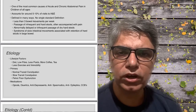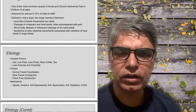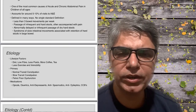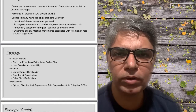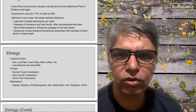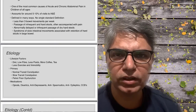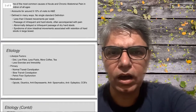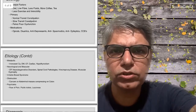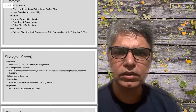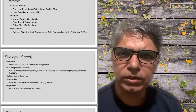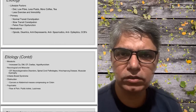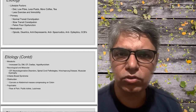Calcium channel blockers — though more common in adults — are notorious for causing constipation as a side effect, such as diltiazem and amlodipine. Metabolic reasons include hypercalcemia, which can be caused by hyperparathyroidism or sarcoidosis, and diabetes mellitus, which through its autonomic dysfunction can also lead to constipation.